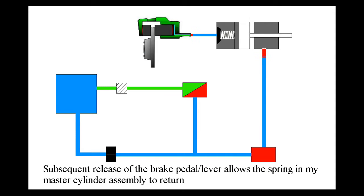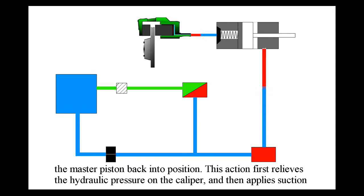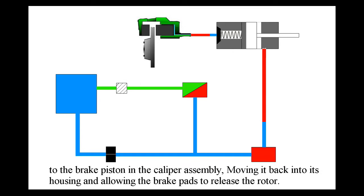Subsequent release of the brake pedal allows the spring in the master cylinder assembly to return the master piston back into position. This action first relieves the hydraulic pressure on the caliper, then applies suction to the brake piston in the caliper assembly, moving it back into its housing and allowing the brake pads to move away from the rotor.